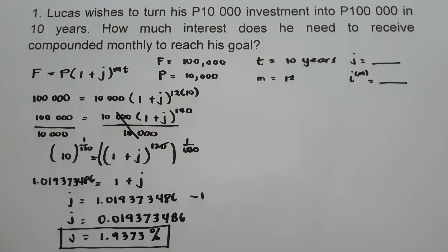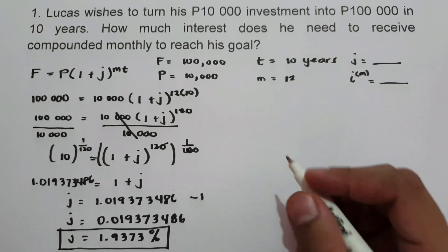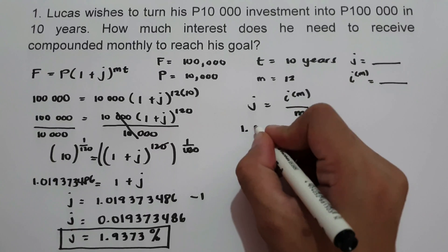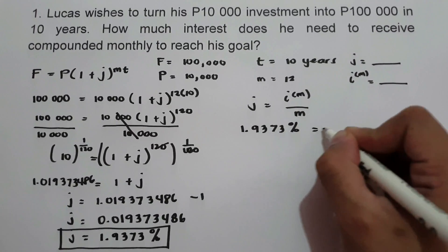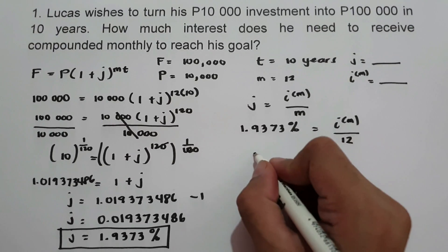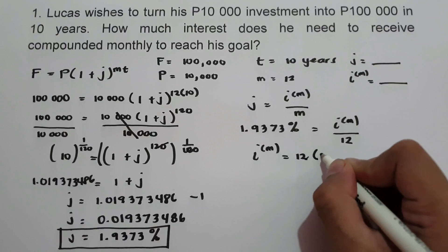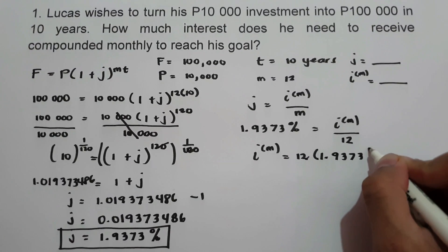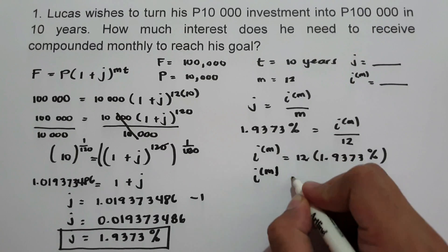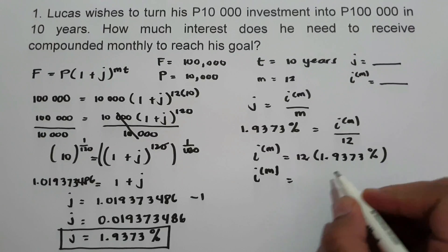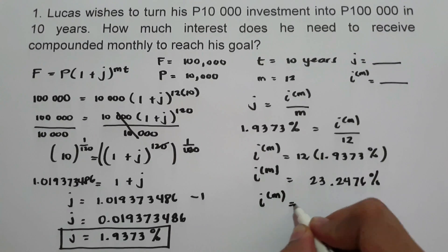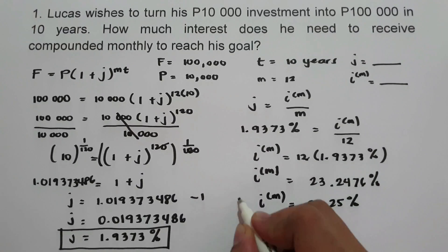Now let us find the value of the nominal rate. Using J equals I^M over M, where J is 1.9373% and M is 12, we multiply 12 by the value of J. So I^M equals 12 times 1.9373%, which is 23.2476%. We can also write our answer as I^M equals 23.25%. This is our answer.